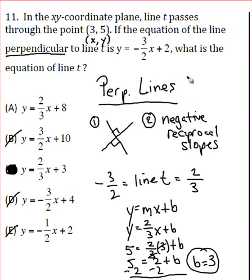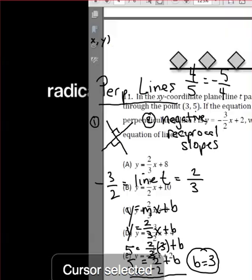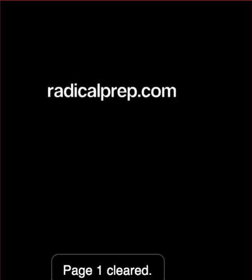So if I told you I had a slope of 4/5, what's a line that's perpendicular to it? What would the slope be? Hopefully you say -5/4. And if you want to practice some more, you can definitely visit my website, and that is www.radicalprep.com.